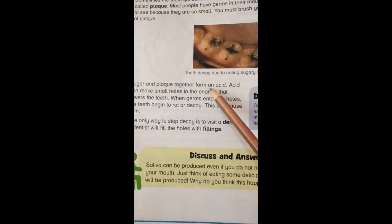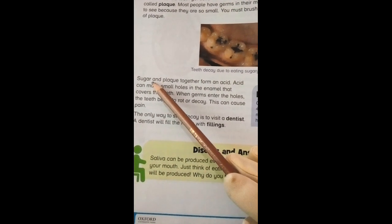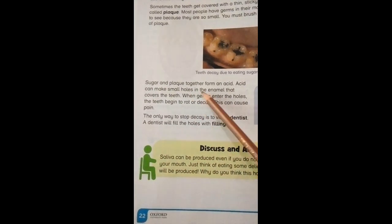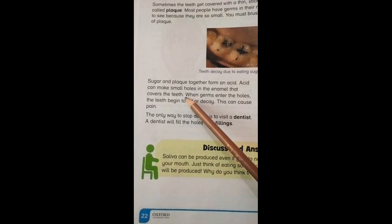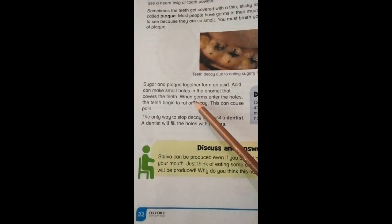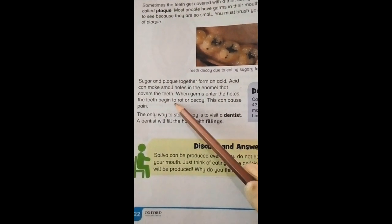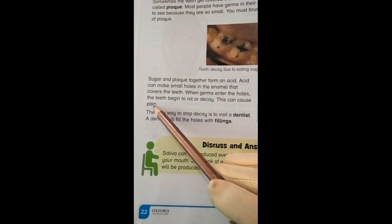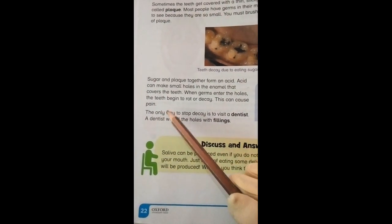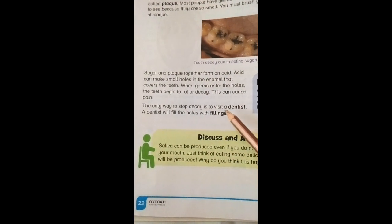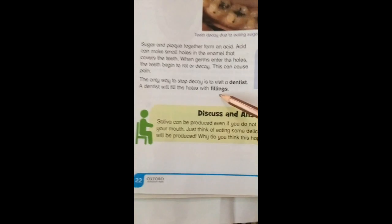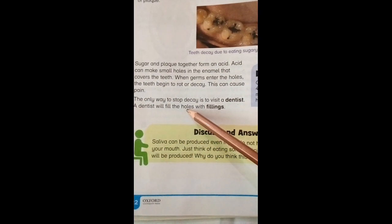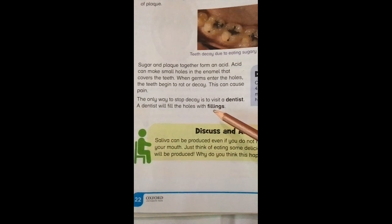Sugar and plaque together form an acid which makes small holes in the enamel that covers the teeth. When germs enter the holes, the teeth begin to rot or decay, which causes pain. The only way to stop decay is to visit a dentist. The dentist will fill the holes with fillings and your pain will stop.